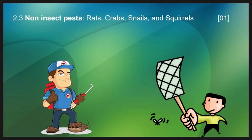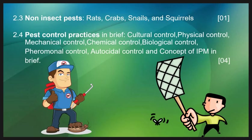We understand what a pest is, but now we will see how to control it. Pest control is important to increase crop productivity and the quality of food and food products. In Topic 2.4, we will study different methods of pest control such as cultural control, physical control, mechanical control, chemical control, and biological control.